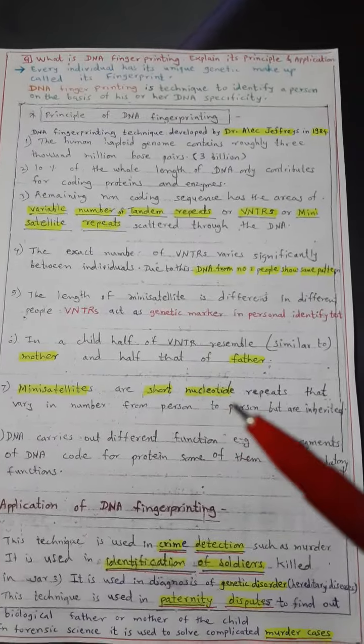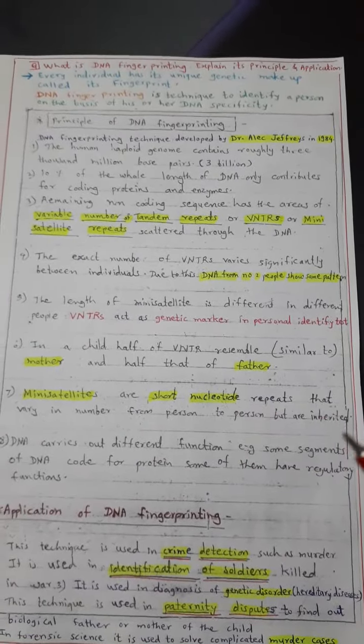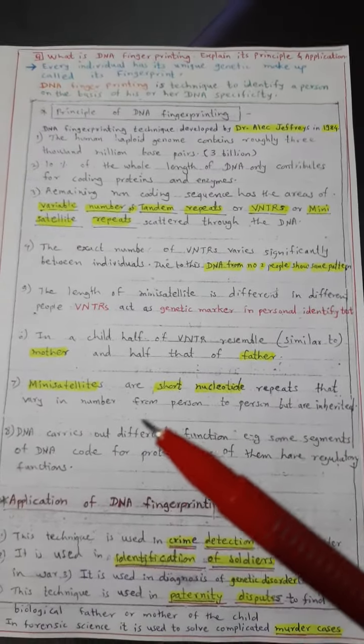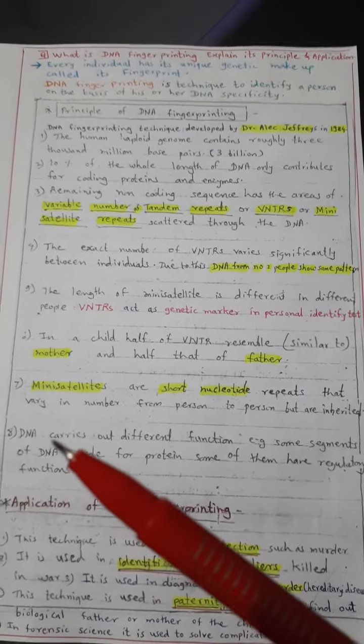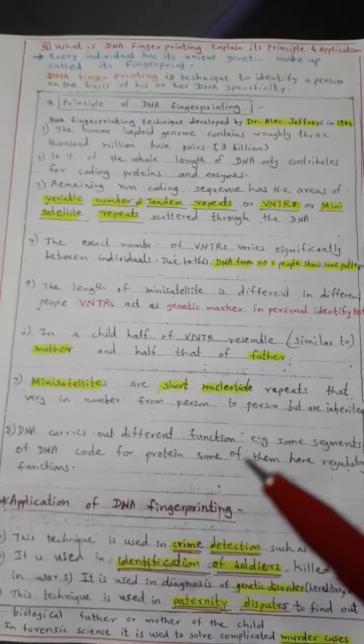Mini satellites are short nucleotide repeats that vary in number from person to person. DNA carries out different functions.